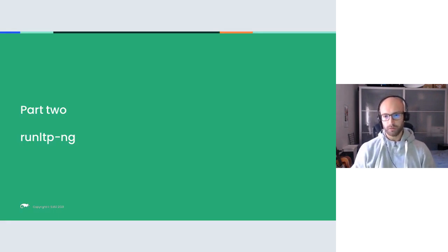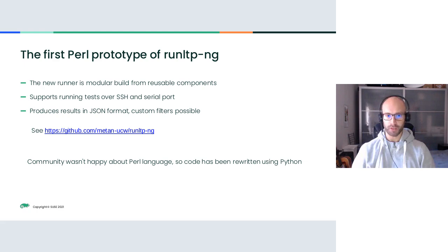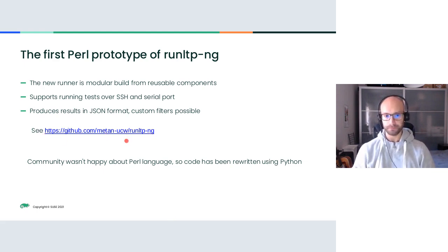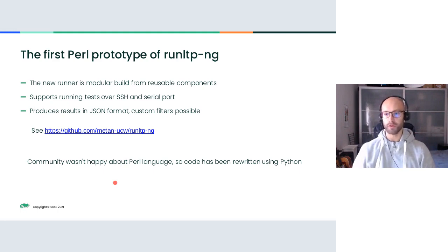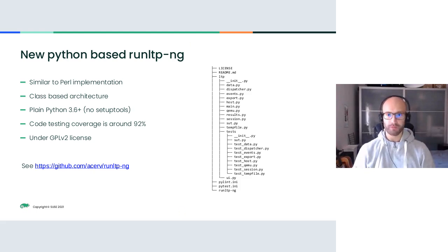Our first choice was to use a high-level scripting language. The first prototype was made in Perl, written by Cyril Hrubis. It's modular and uses SSH and serial port to communicate with the system under test, and produces results in JSON format. However, the community wasn't happy about Perl, so the code has been rewritten using Python.